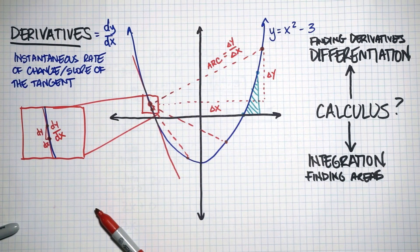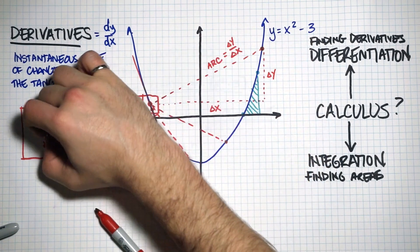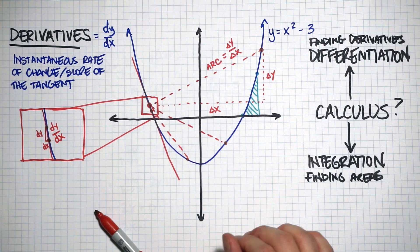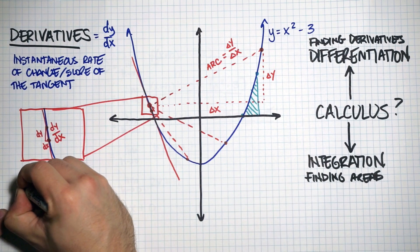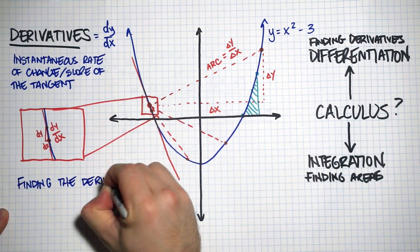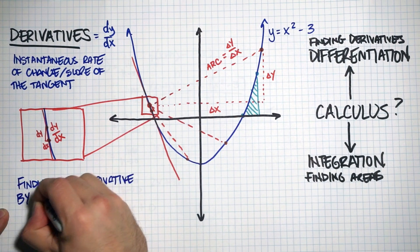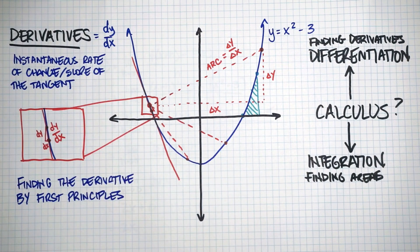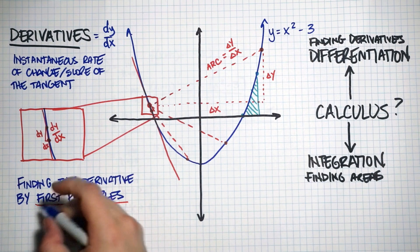The way we've been finding the slope of the tangent is using something called the difference quotient. The difference quotient plugs in a really small h value — basically what delta x is — and taking the limit as h approaches zero allows us to find the slope of the tangent, or the derivative. In calculus, we call using the difference quotient to find the derivative: finding the derivative by first principles.